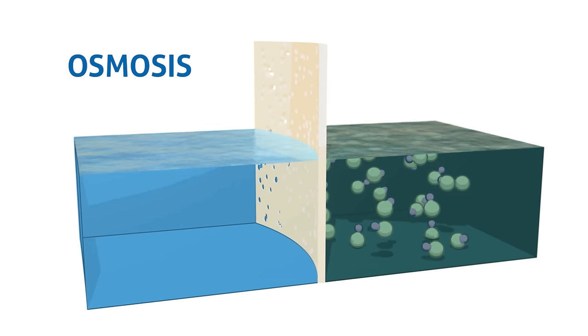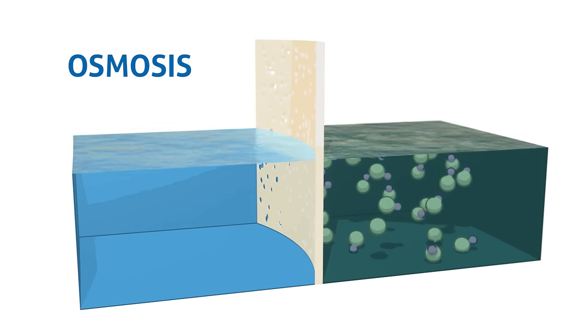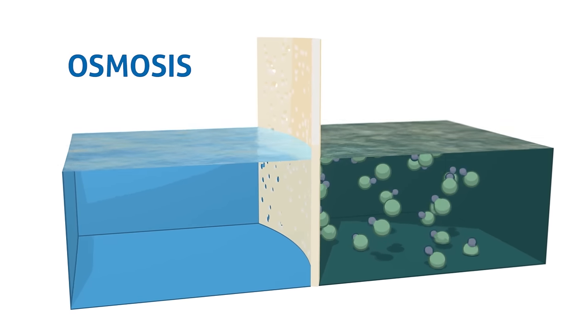Osmosis is a naturally occurring process in which a liquid, such as water, spontaneously passes through a membrane.